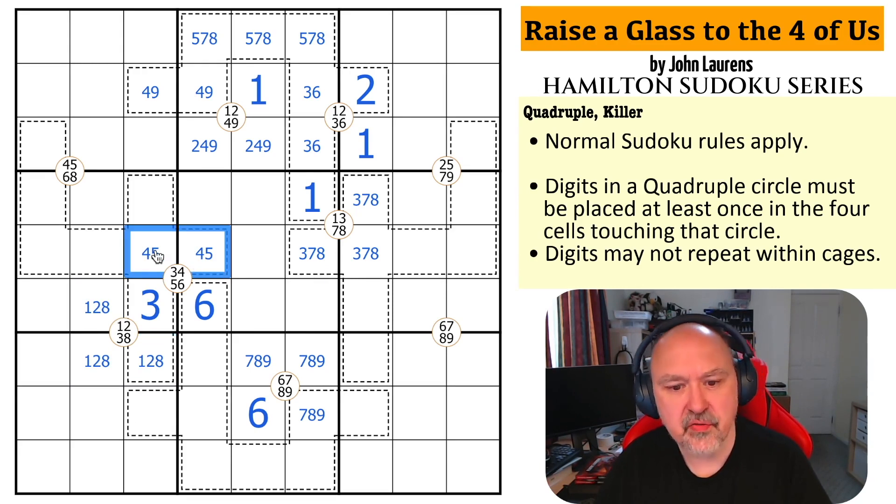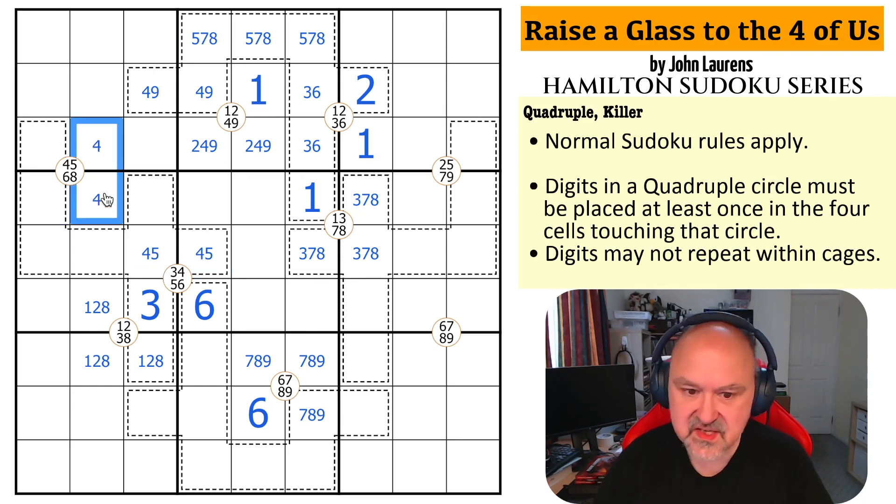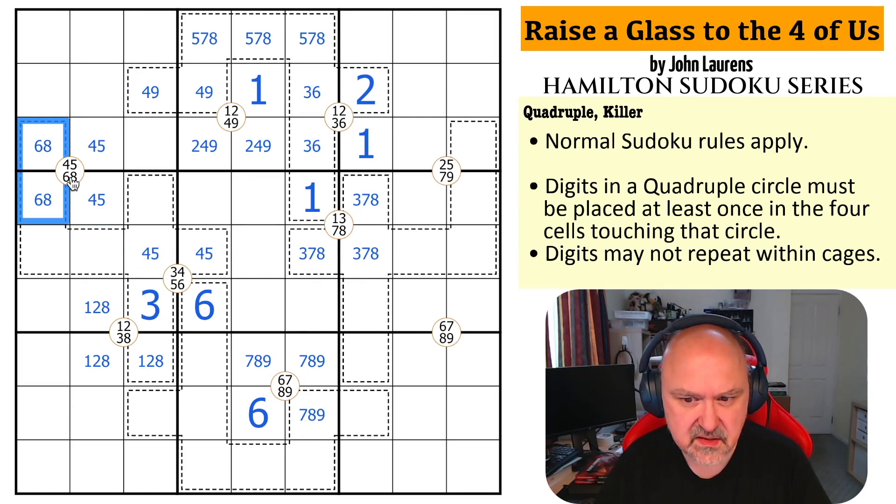This is 1, 2, and 8. 4, 5 in... This is so cool. 4, 5 in this cage can't be here. So, this has to be the 4, 5. This is the 6, 8. And, there's 8 in this cage. So, this is not the 8. This is a 1 or a 2.